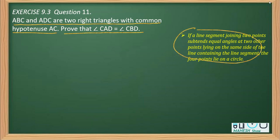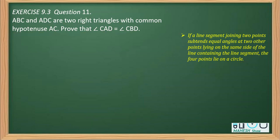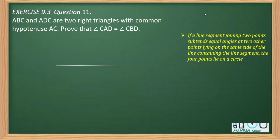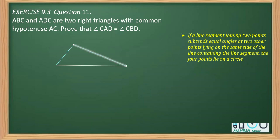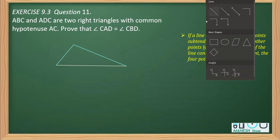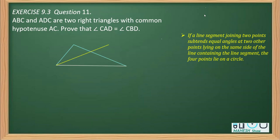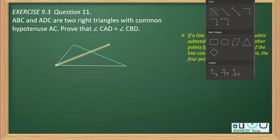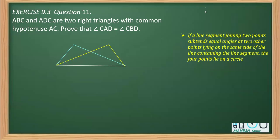This is based on a specific property, but first let me show you the figure involved. I'm making the hypotenuse AC first, then constructing a right angle triangle on one side. This is one right angle triangle using AC as the common hypotenuse, and the other right angle triangle is on the other side, joined to this hypotenuse. So you can see we have AC as the hypotenuse with two right triangles.